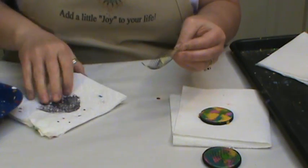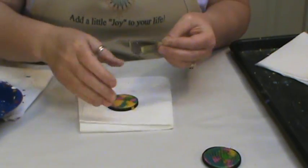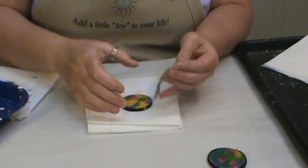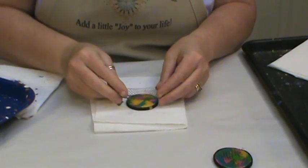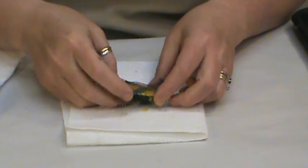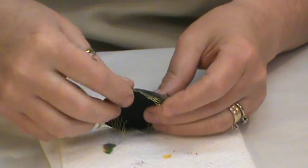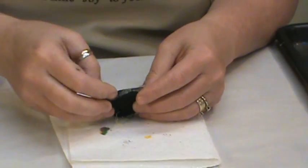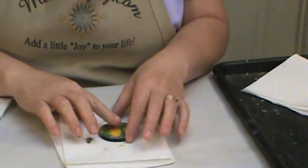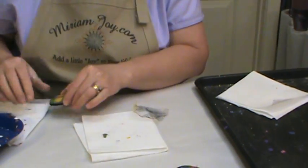We're going to take this netting now - remember which side you painted it on - and we're going to set it around our piece. You can hold it in the back if you want a bigger piece that you can hold. And I didn't let that dry enough.